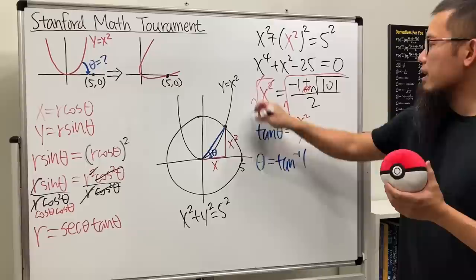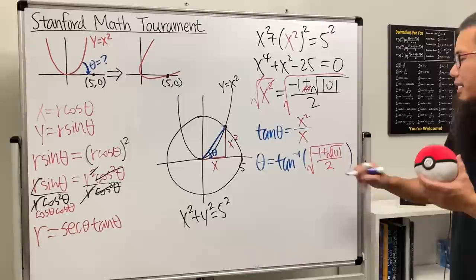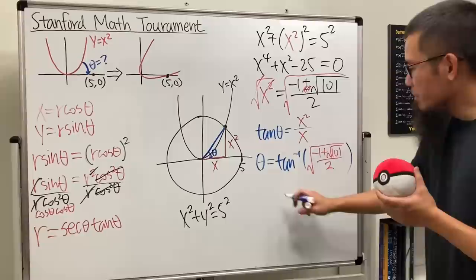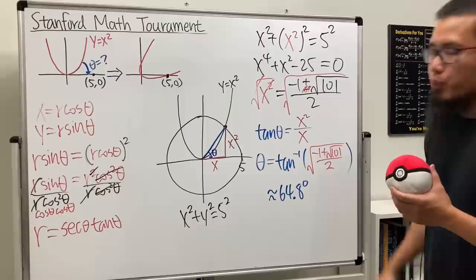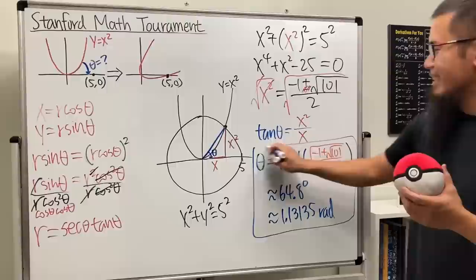So theta is going to be inverse tangent, and of course we do this over that, which is just x. What's x? Well, this is x squared, so let's go ahead and take the square roots on both sides, just the positive version. So ladies and gentlemen, here we have inverse tangent of the square root of (negative 1 plus square root of 101) all over 2. Of course this will be considered the exact answer. And let me tell you, this is approximately 64.8 degrees, and this is approximately 1.13135 radians. So this is so cool, isn't it?